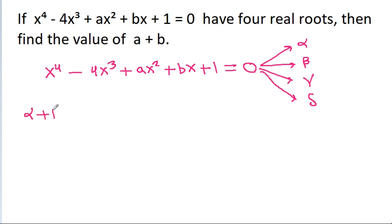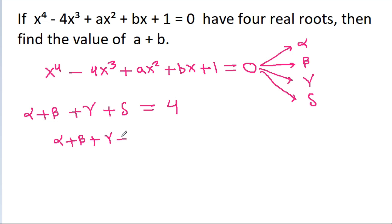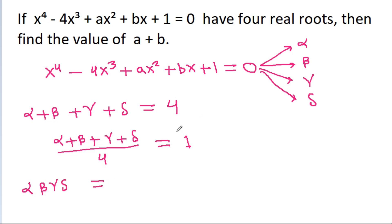The sum of roots alpha + beta + gamma + delta equals 4, so (alpha + beta + gamma + delta)/4 = 1. Also, the product of roots alpha·beta·gamma·delta equals 1, so (alpha·beta·gamma·delta)^(1/4) = 1.